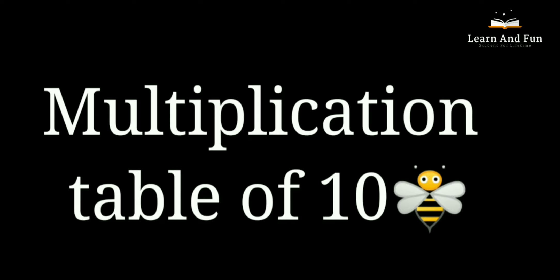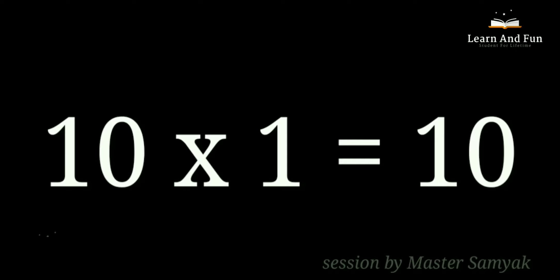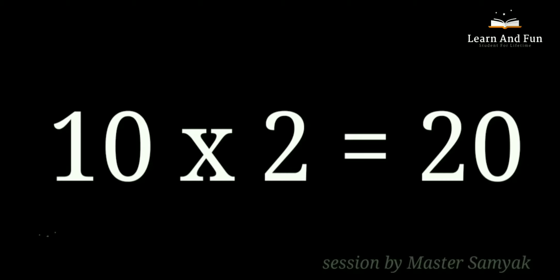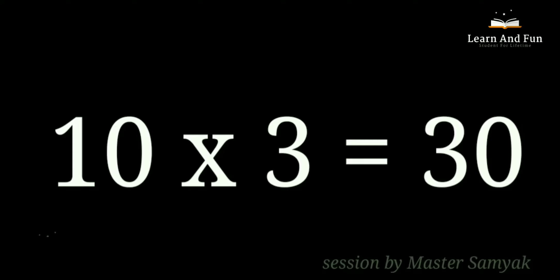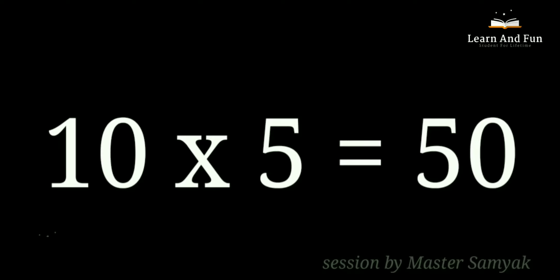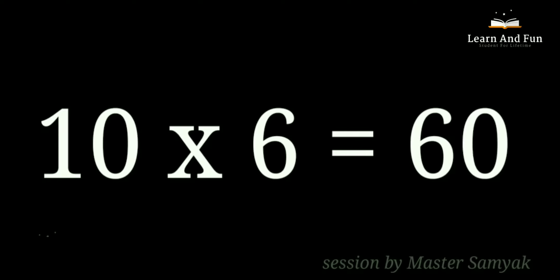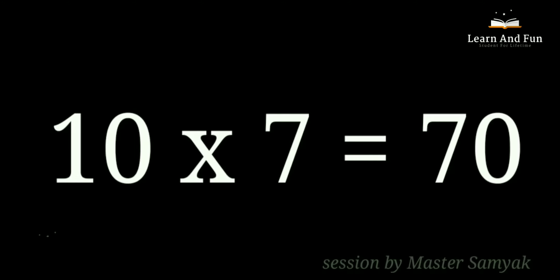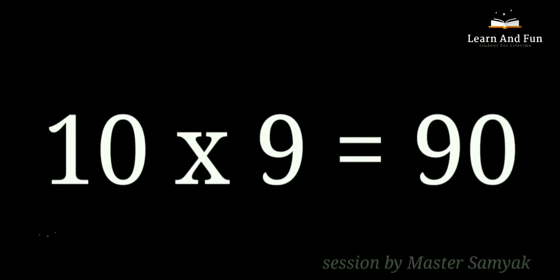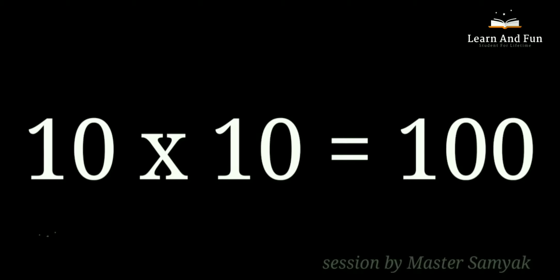Multiplication Table of 10. 10 ones are 10. 10 twos are 20. 10 threes are 30. 10 fours are 40. 10 fives are 50. 10 sixes are 60. 10 sevens are 70. 10 eights are 80. 10 nines are 90. 10 tens are 100.